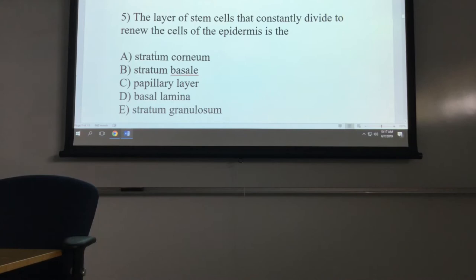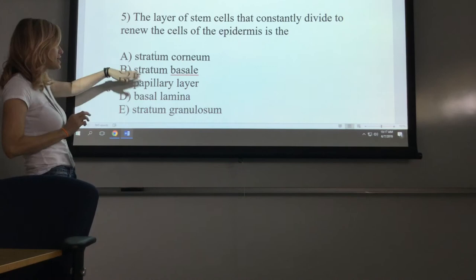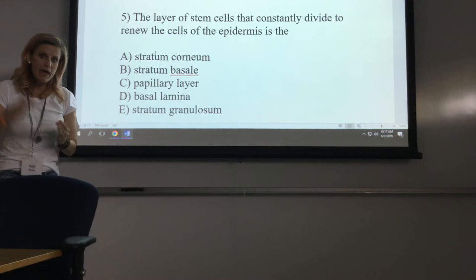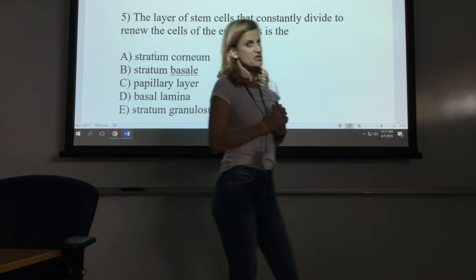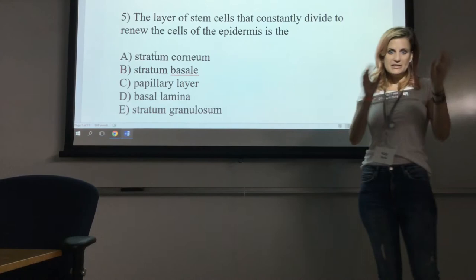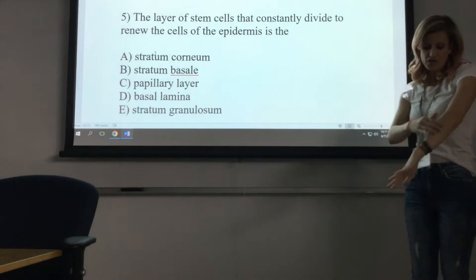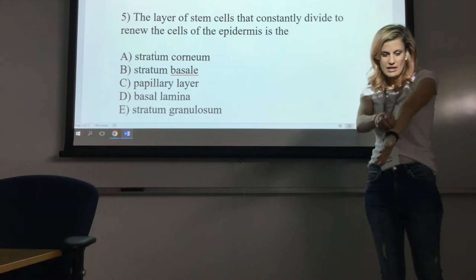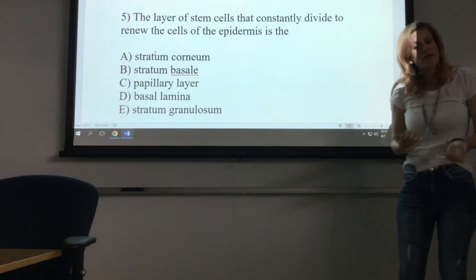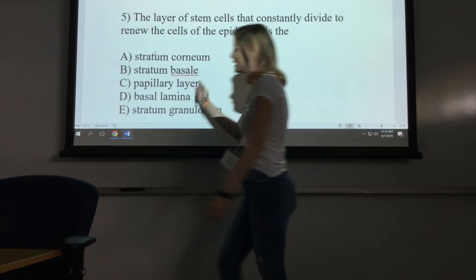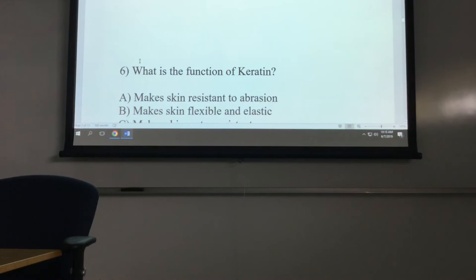The layer of stem cells that constantly divide to renew the cells of the epidermis is the stratum basale. The epidermis is divided into layers, and the deepest, bottommost layer is the stratum basale, filled with basal cells that just divide continuously, making more and more cells. Those cells get pushed up and up to eventually replace the cells we're losing. We constantly lose skin cells and replace them from the stratum basale.